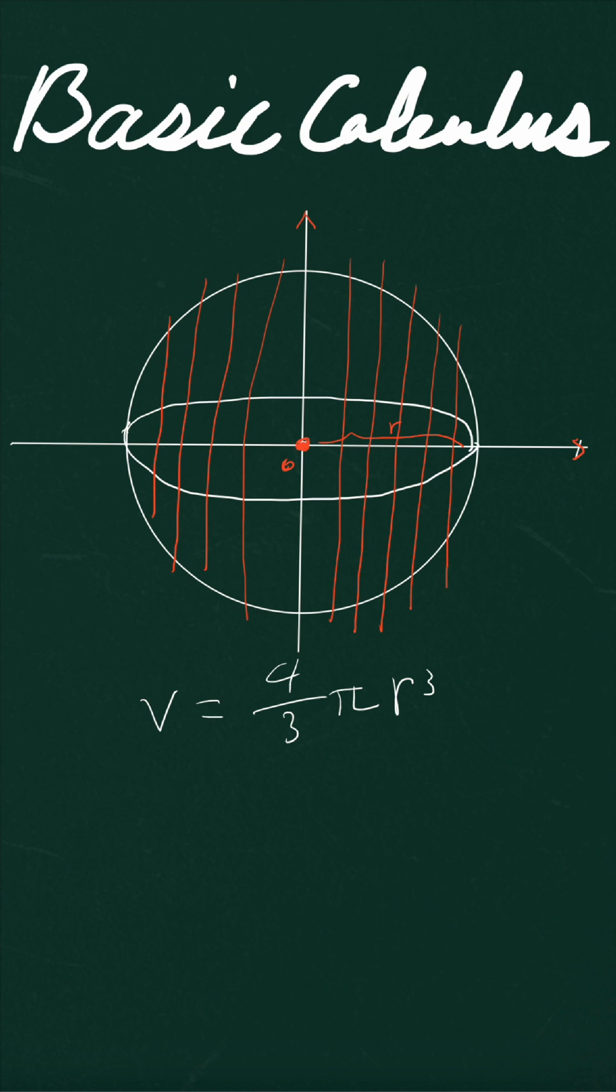The volume of the sphere can be expressed as the integral from negative r to positive r. If you look at the slices sideways, you can see the slice is actually a circle with area A. The volume is the integral of area A from negative r to r with respect to variable x. We only need to find the expression for area A.